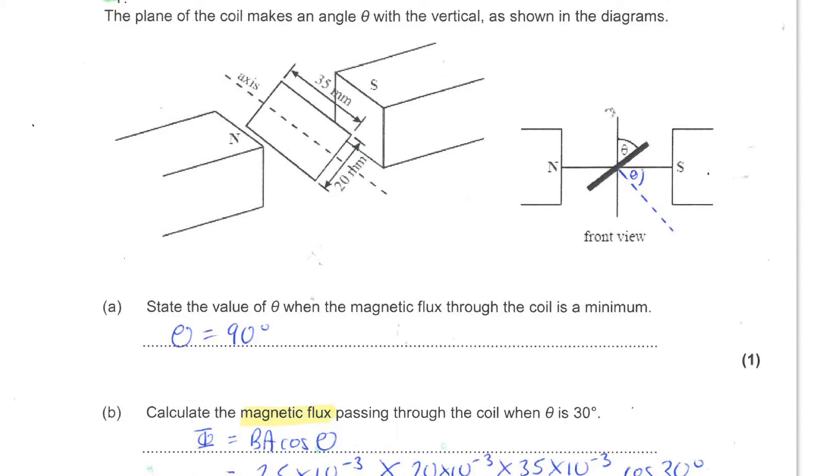You can state the value of the angle theta when the magnetic flux through the coil would be a minimum. So look at this diagram. The minimum flux through the coil would be when the coil sits horizontally along the field lines. And that means the angle theta would be 90 degrees.